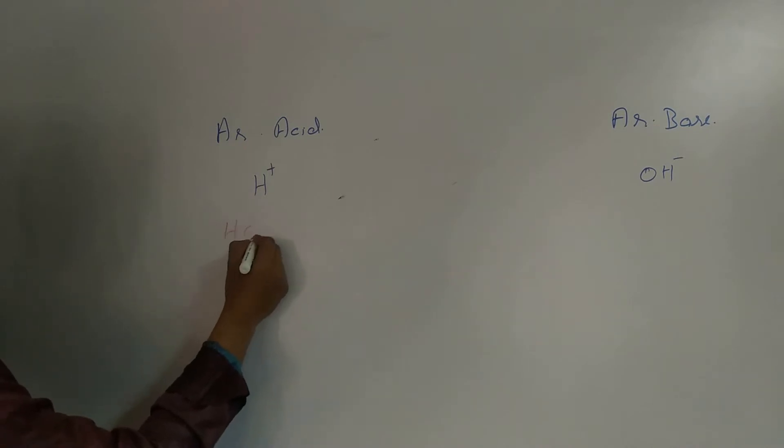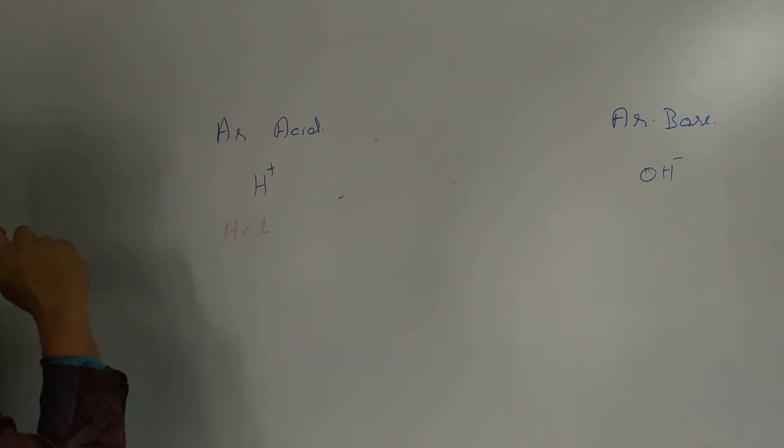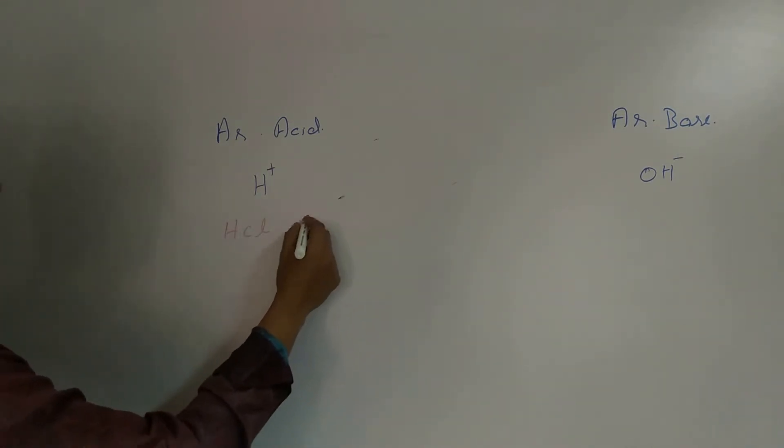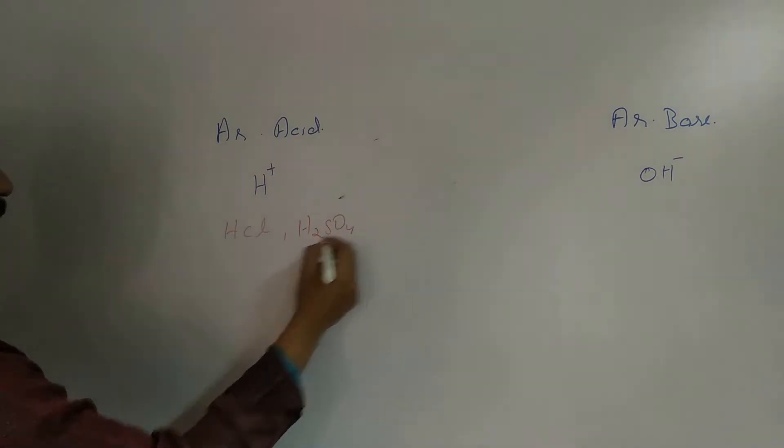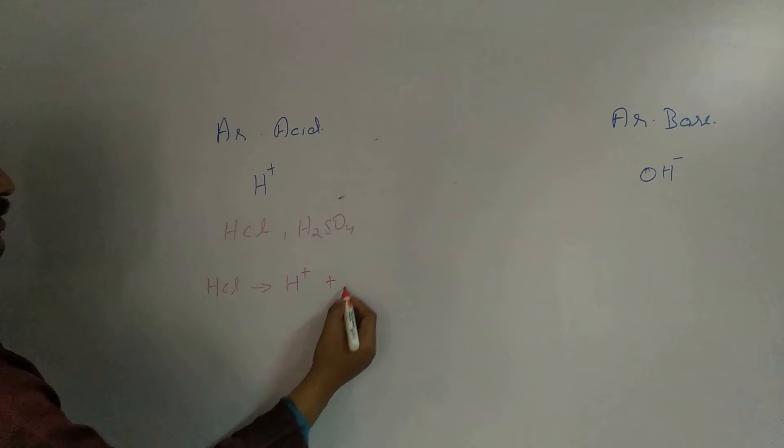For example, HCl. I am taking a protonic acid. In a protonic acid, HCl or H2SO4, when I dissociate this HCl or this HCl is dissolved in water, it will give H plus ion as well as Cl minus ion. It will dissociate into H plus and Cl minus.